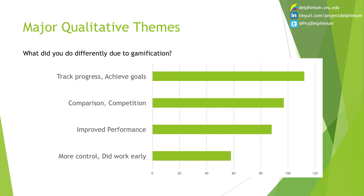We asked students what they did differently in the gamified course versus a traditional course and did a qualitative analysis. The major themes were: I was able to track my progress and set and achieve goals more easily; I was driven by comparison and competition; I worked harder than I did in other courses; and I felt like I had more control and did more work early, which I've never done before. Through the lens of self-determination theory, you can see autonomy, social connectedness, and a sense of competency.